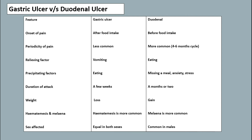Differences between gastric and duodenal ulcer: pain is after food intake in gastric ulcer, before food in duodenal. Pain is less common in gastric, more common in duodenal. Relieving factor is vomiting in gastric, eating in duodenal. Aggravating factors are eating in gastric; missing a meal, anxiety, and stress in duodenal. Duration of attack is a few weeks in gastric, one to two months in duodenal. Weight loss occurs in gastric, weight gain in duodenal. Haematemesis is more common in gastric; melaena is more common in duodenal. Gastric ulcer is common in both sexes; duodenal ulcer is more common in males.